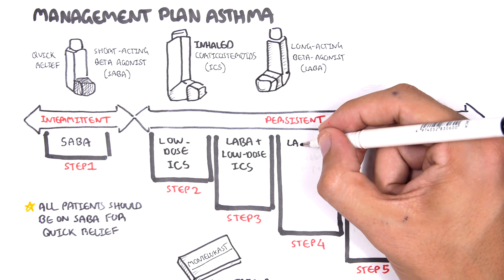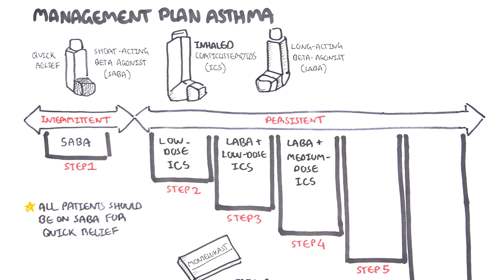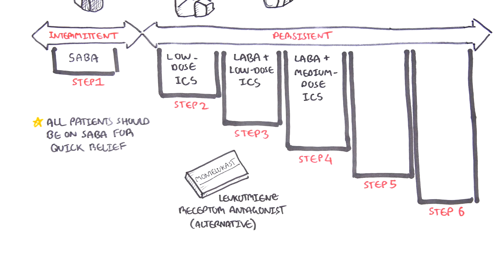Step 4, a long-acting beta agonist can be used together with medium-dose inhaled corticosteroids and short-acting beta agonists.